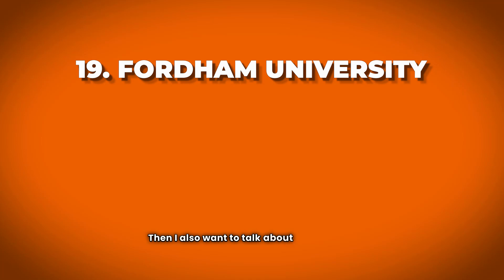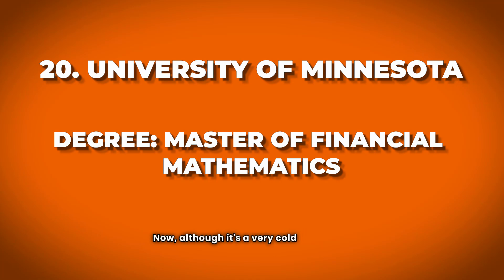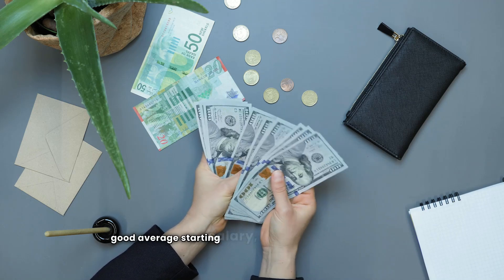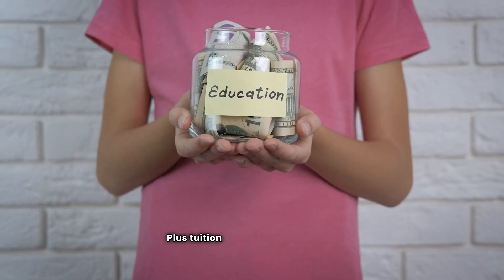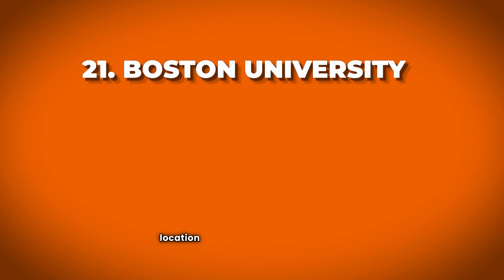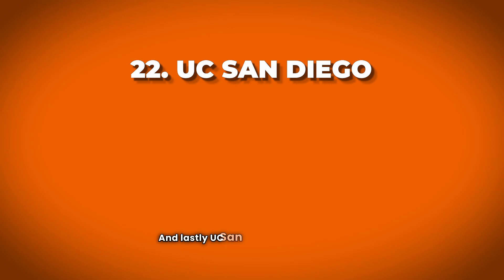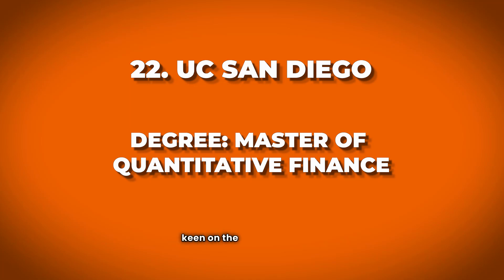Also worth considering is Fordham University in New York, and the University of Minnesota with a Masters of Financial Mathematics — although cold, it taps into the Midwest hub with average starting salaries of $90,000 to $120,000 and tuition around $50,000 per year. Boston University offers an MS in Mathematical Finance and Financial Technology, tapping into the Boston location. Finally, UC San Diego offers a Masters of Quantitative Finance for those keen on the west coast.